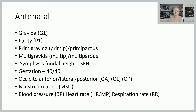Looking at abbreviations used antenatally: gravida is the number of times someone's been pregnant, usually written as G with a number after it. Parity is the number of times someone has actually given birth. So G1P0 means pregnant for the first time but hasn't delivered any babies. You might see gravida 1 para 2, which would tell you she had twins. Prima gravida means pregnant for the first time, prima paris means she's delivered her first baby, multi gravida means pregnant for a second or subsequent time, and multi paris means she's had more than one baby.